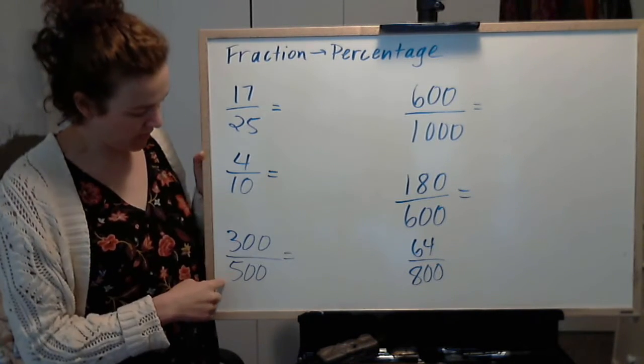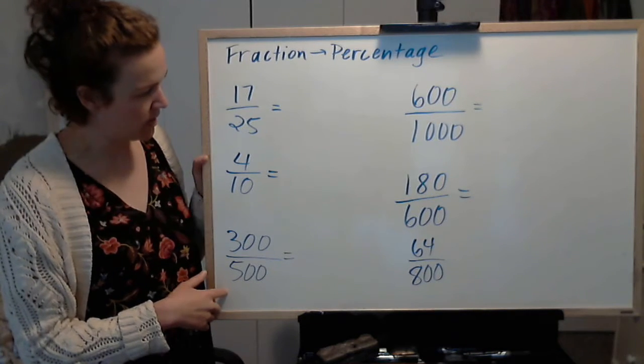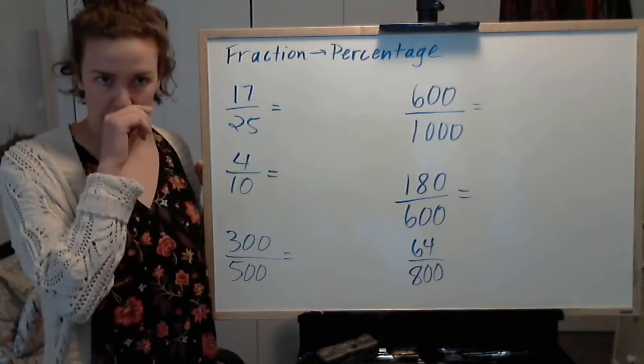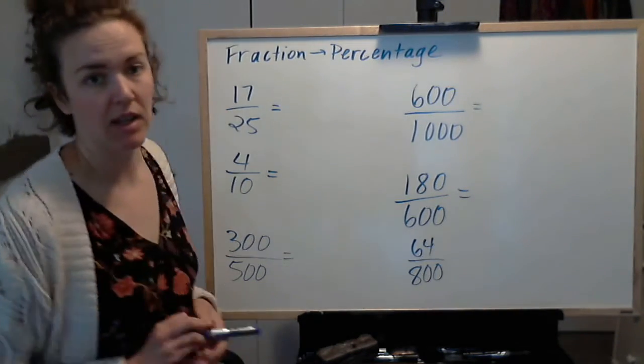In some cases you might be able to see easily what to divide by, and in some cases you might just want to simplify it down and then move back up to 100. So there's a bit of flexibility in how you do this.